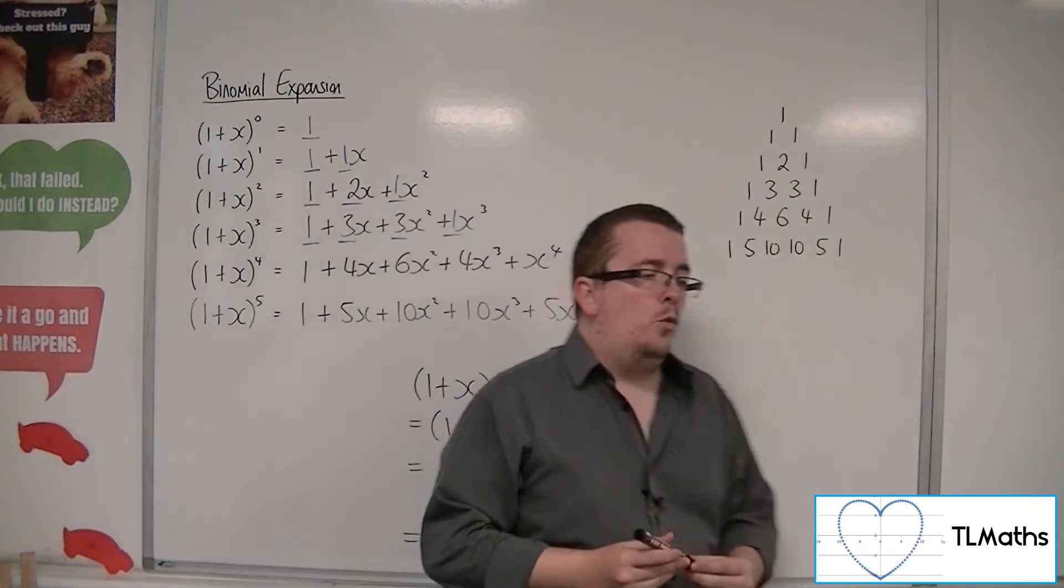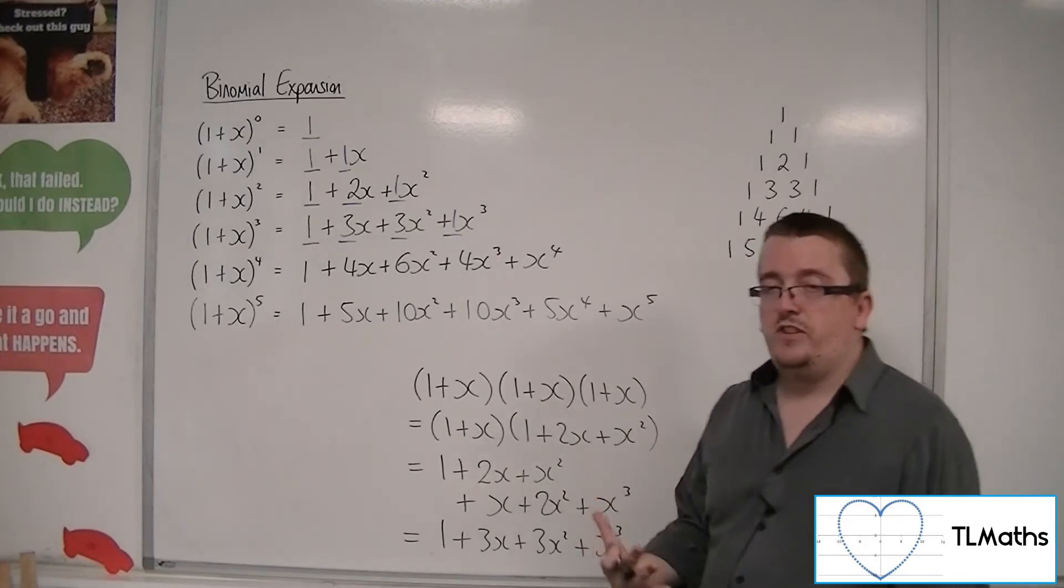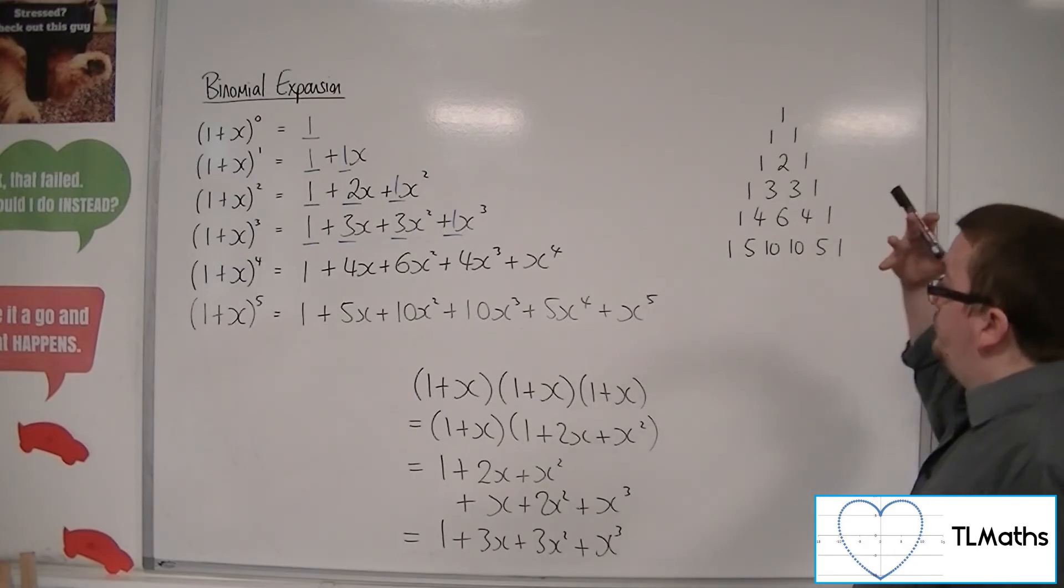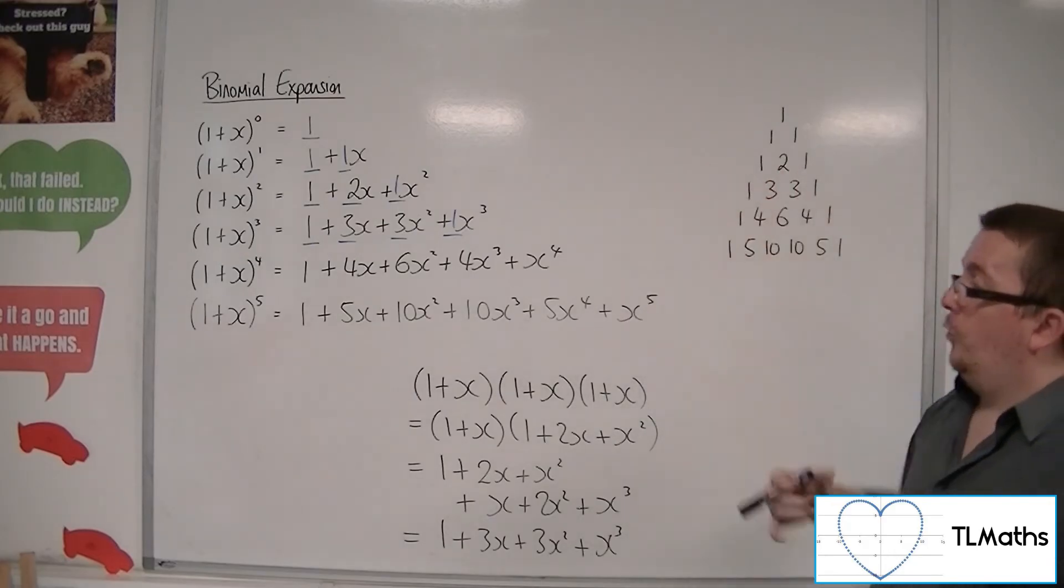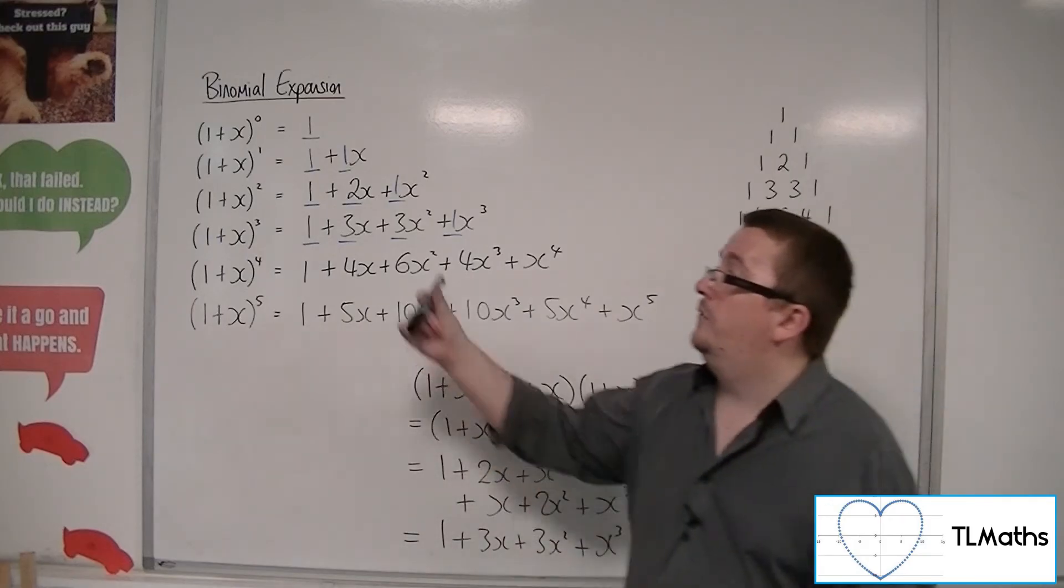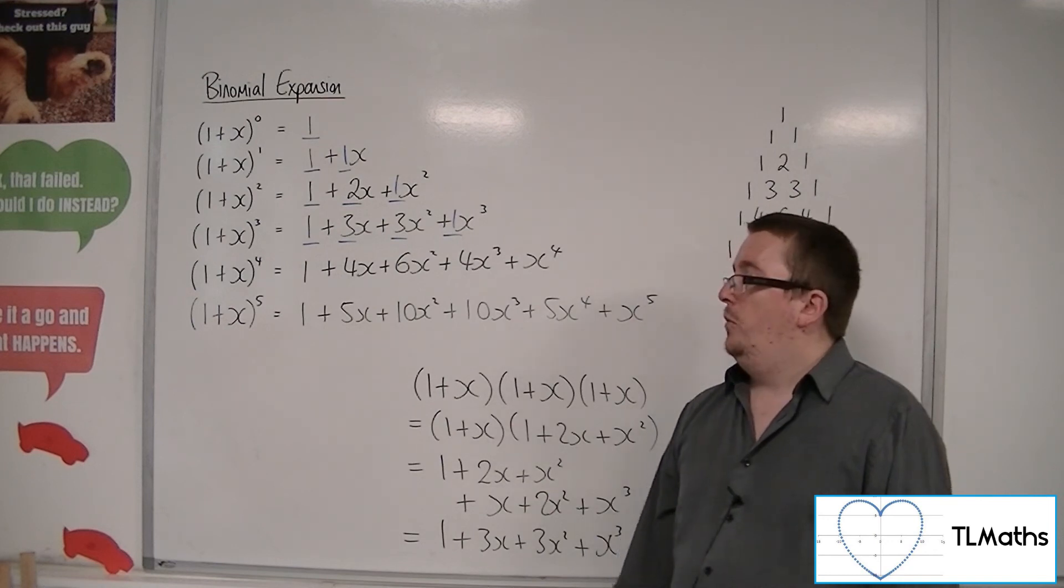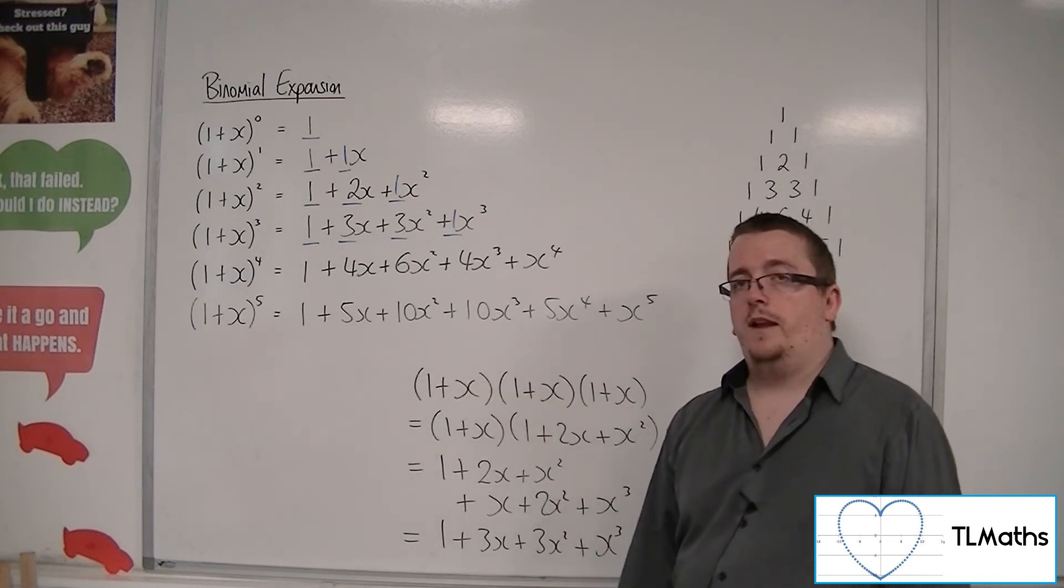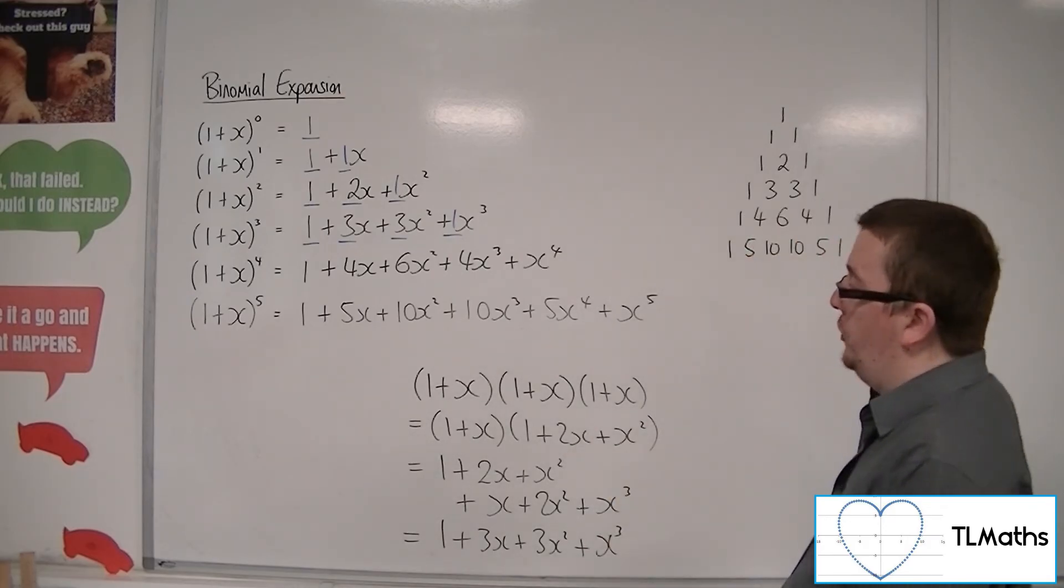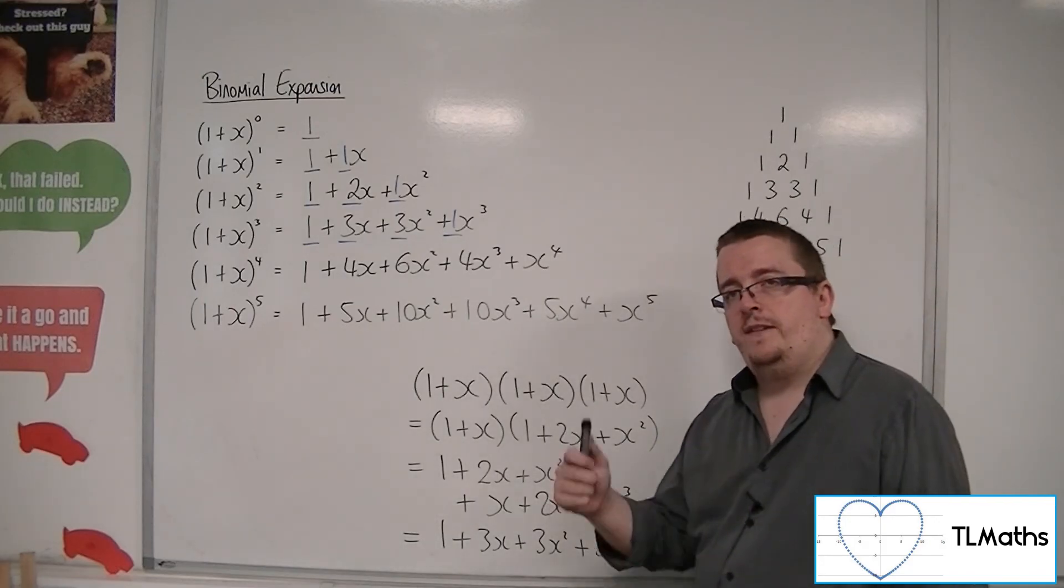So what you're seeing here is actually a very quick and nifty way of expanding these brackets out. So what happens if I've got (2+x)^5? Well, we can't use this anymore, okay? Something else must be going on, because we're going to have to deal with that 2 somehow. So that is what we're going to investigate in the next video. Thank you very much.